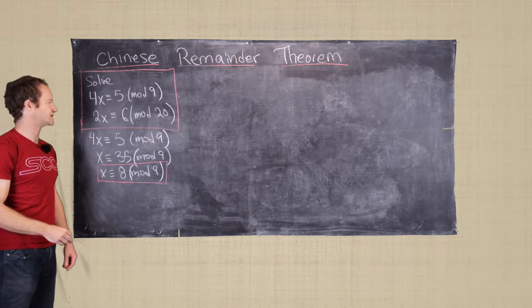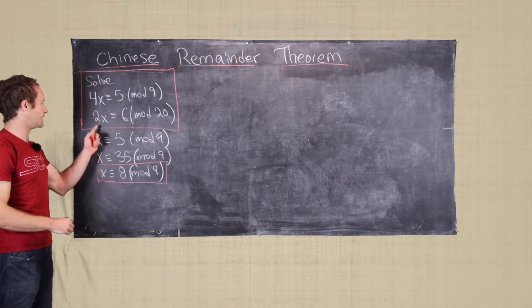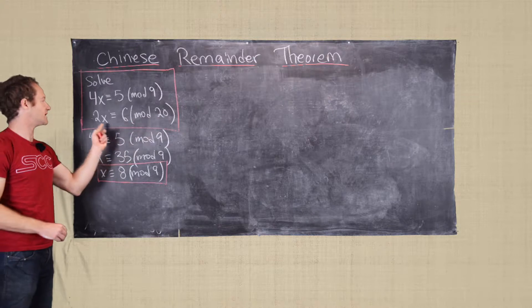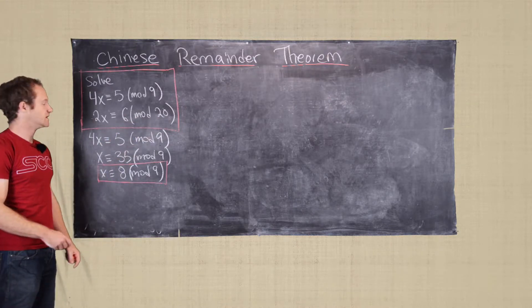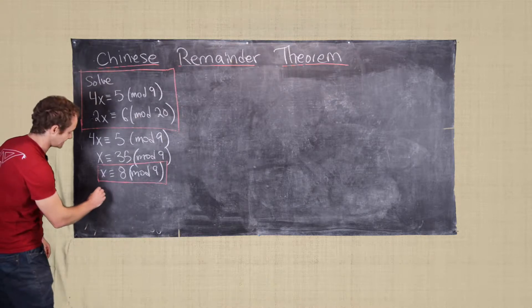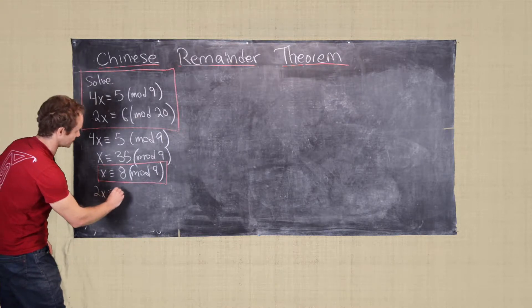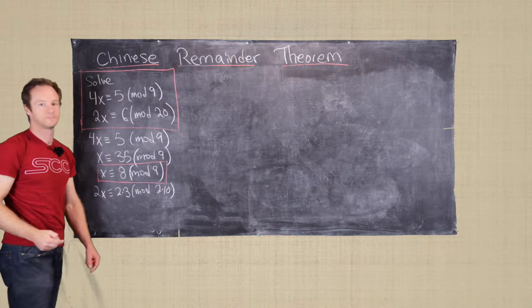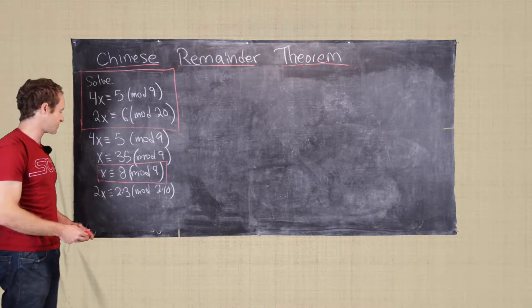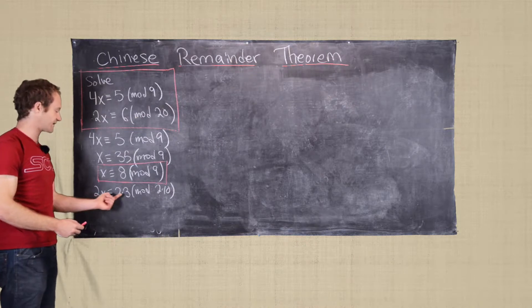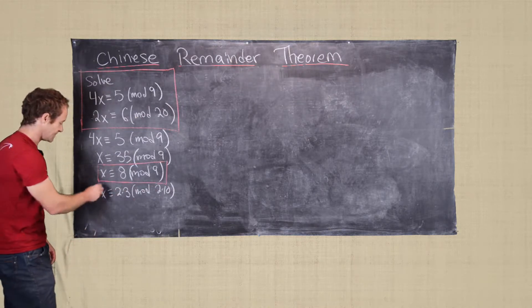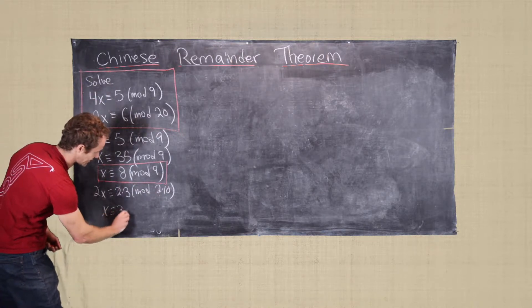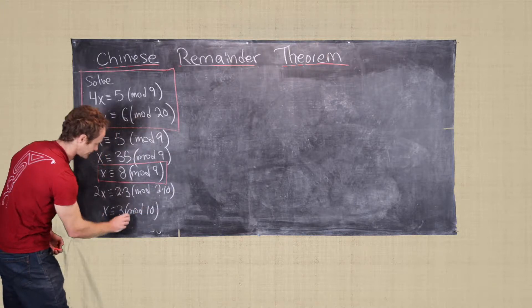Now we need to work on this 2x is congruent to 6 mod 20. So we notice that 2 is not invertible mod 20, but all three of these numbers are even, so we can take advantage of that. So we'll write this thing as 2x is congruent to 2 times 3 mod 2 times 10. And there was a result that I proved earlier on the channel, that if you have a setup like this, you can cancel the common factor from all three of these parts. So we can cancel this 2, and we're left with x is congruent to 3 mod 10.